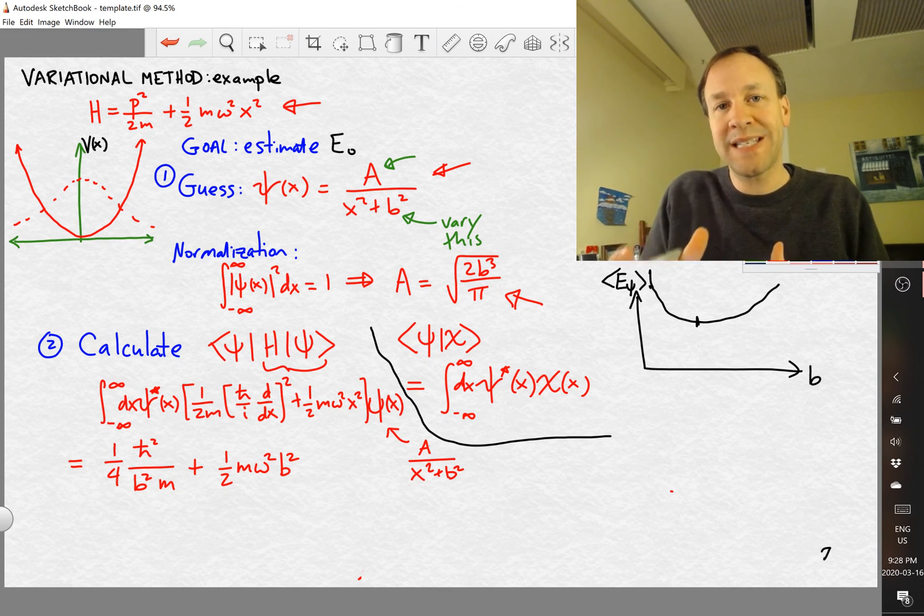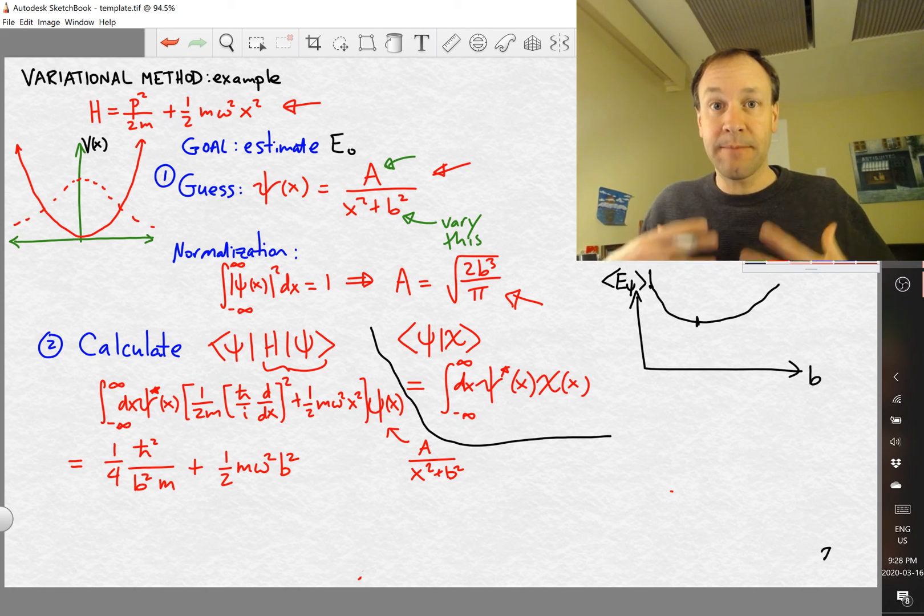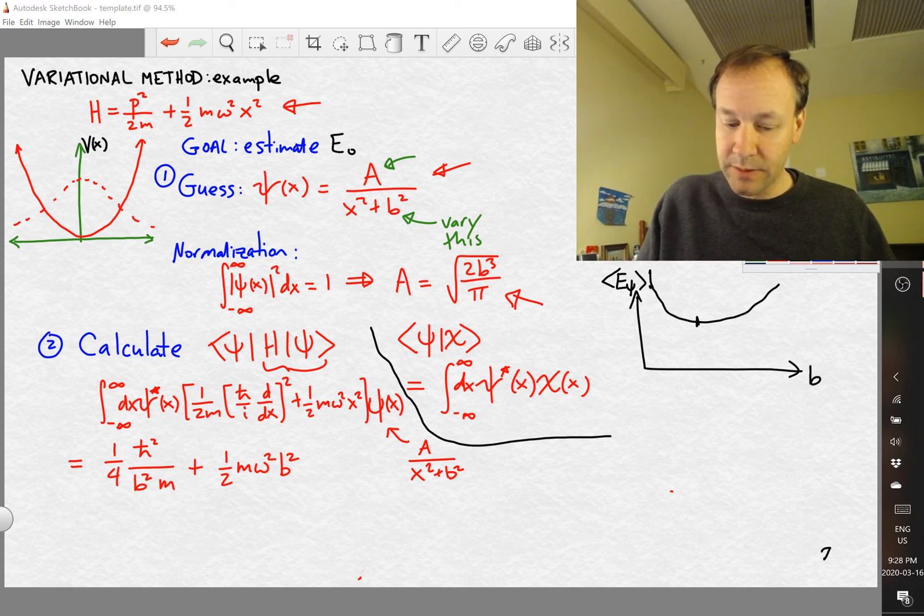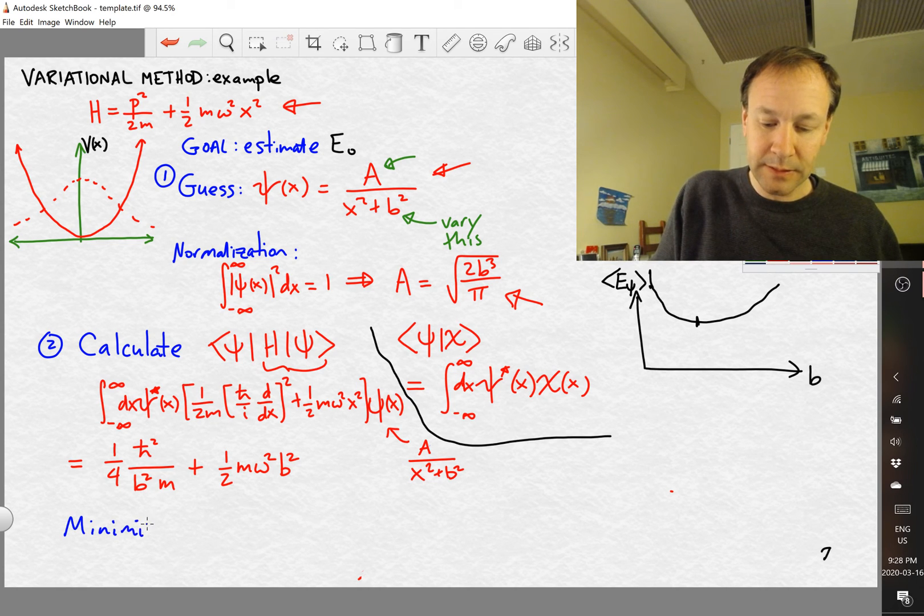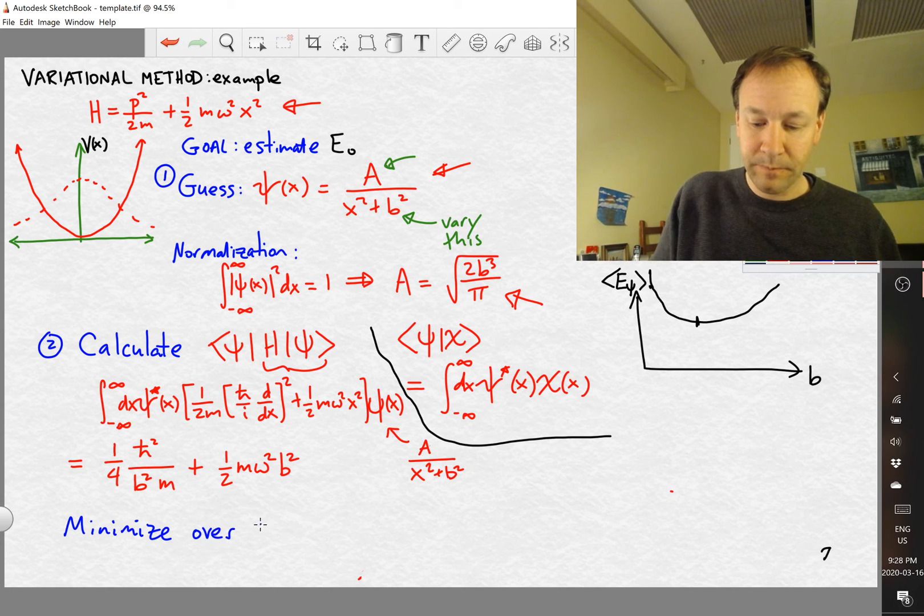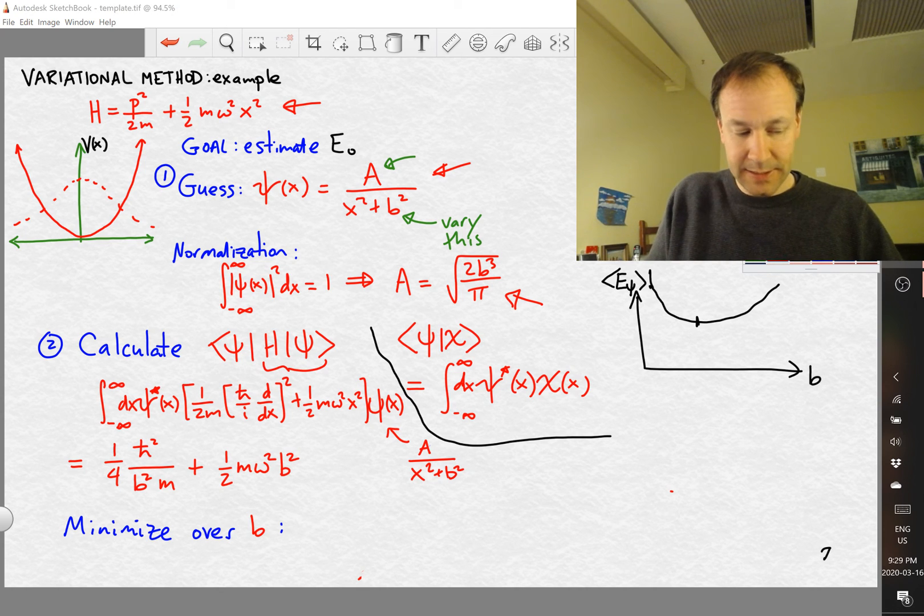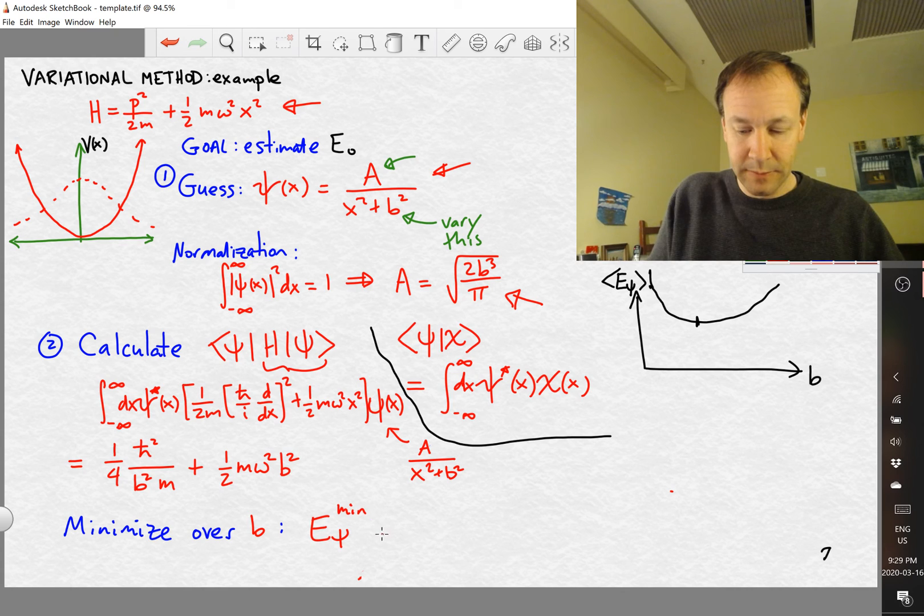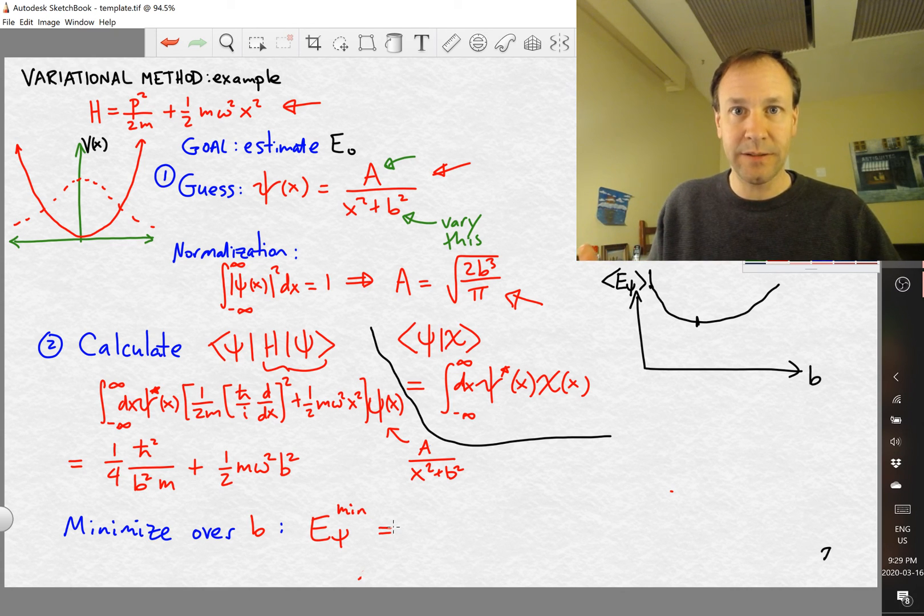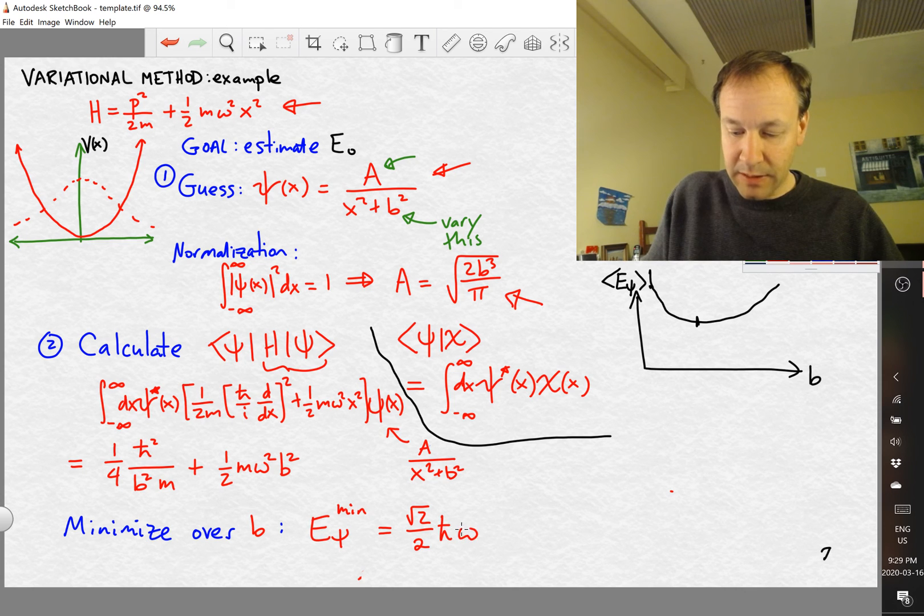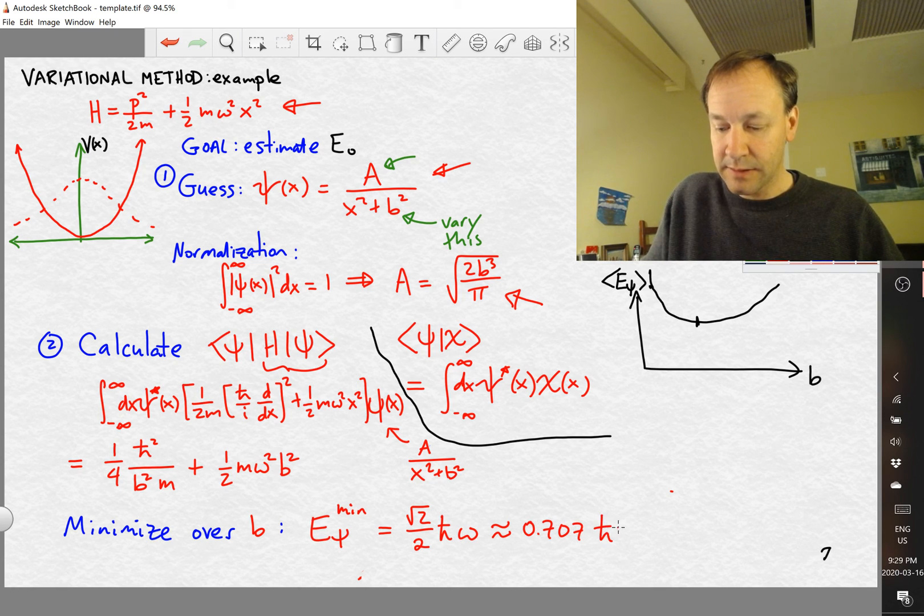And so that means that there's this one particular value of B that is going to give us the best, the closest upper bound on our ground state energy. So what we want to do now is minimize over B. And what we find if we use basic calculus to minimize that function is that E_φ_min - you should maybe take a few minutes to try that - it works out to square root of 2 over 2 times ℏω. So that's numerically approximately equal to 0.707 ℏω.